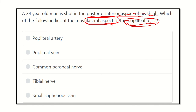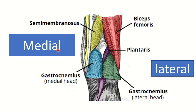The options are: popliteal artery, popliteal vein, common peroneal nerve, tibial nerve, and small saphenous vein. The popliteal fossa is a diamond-shaped space which lies in the posterior part of the knee joint, including the lower part of the thigh.